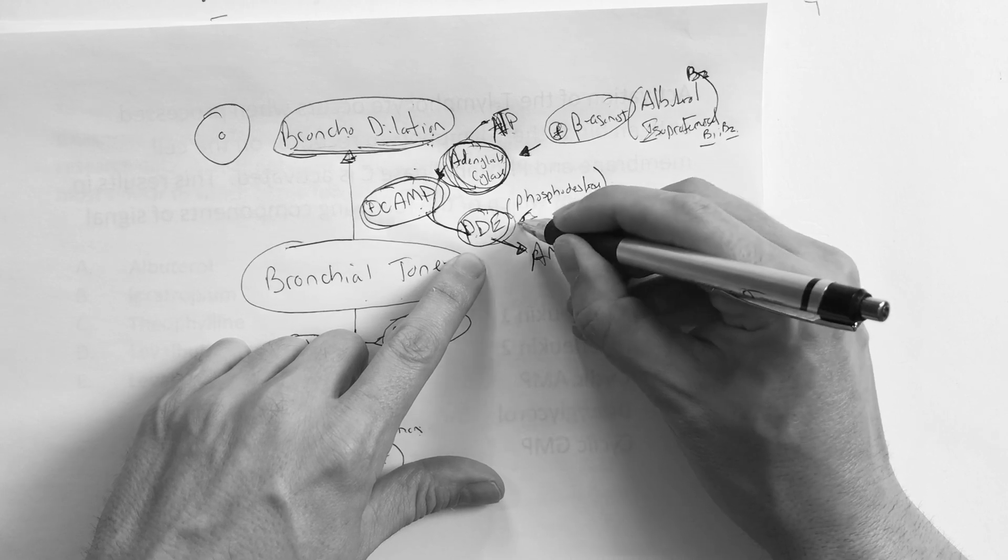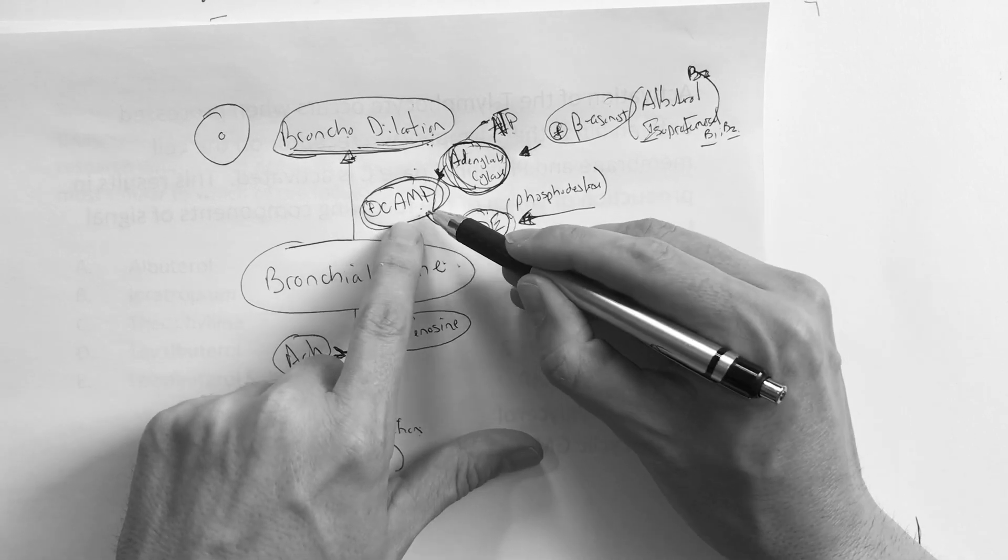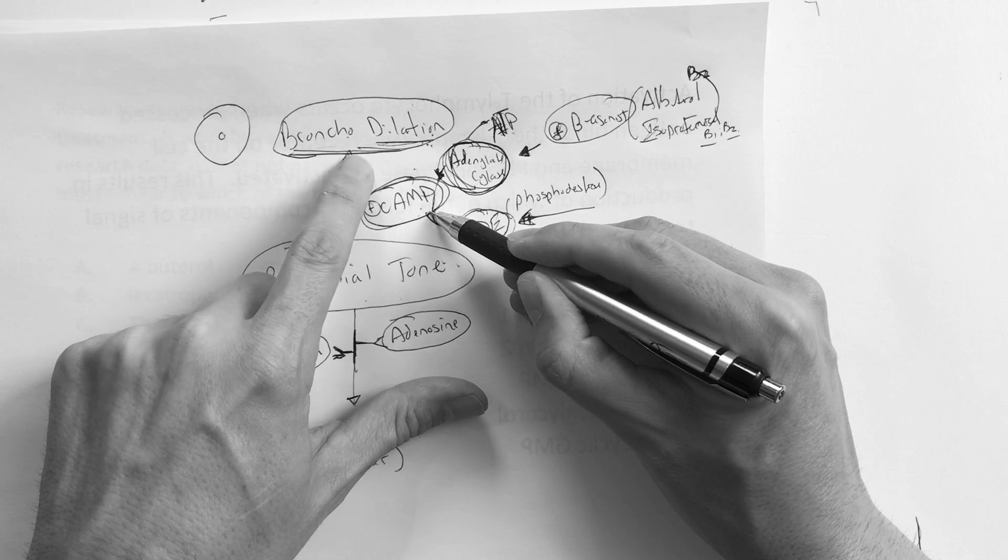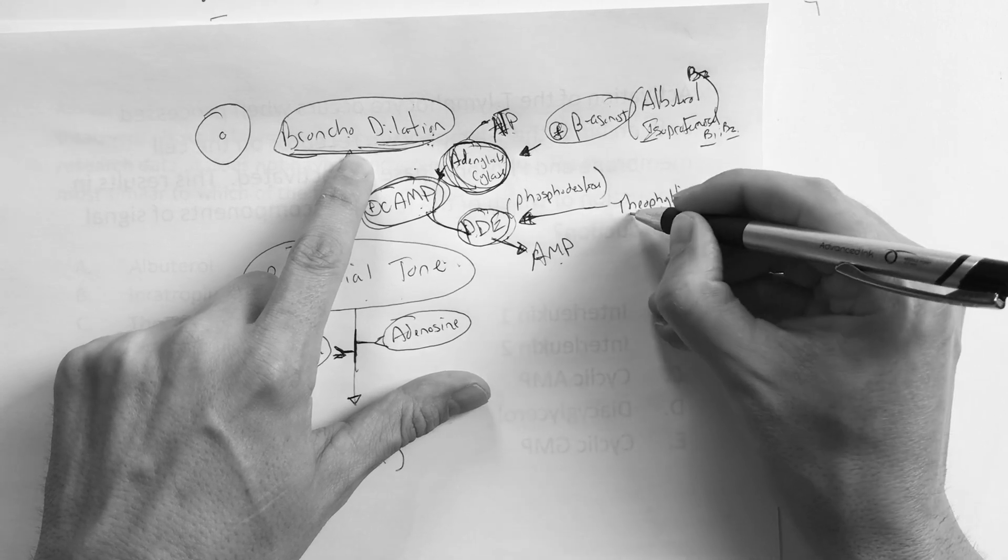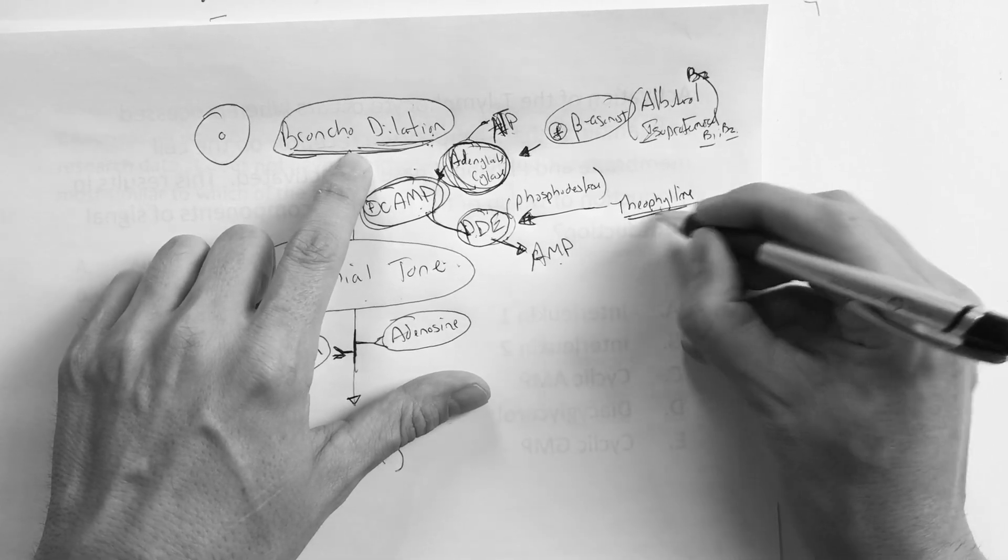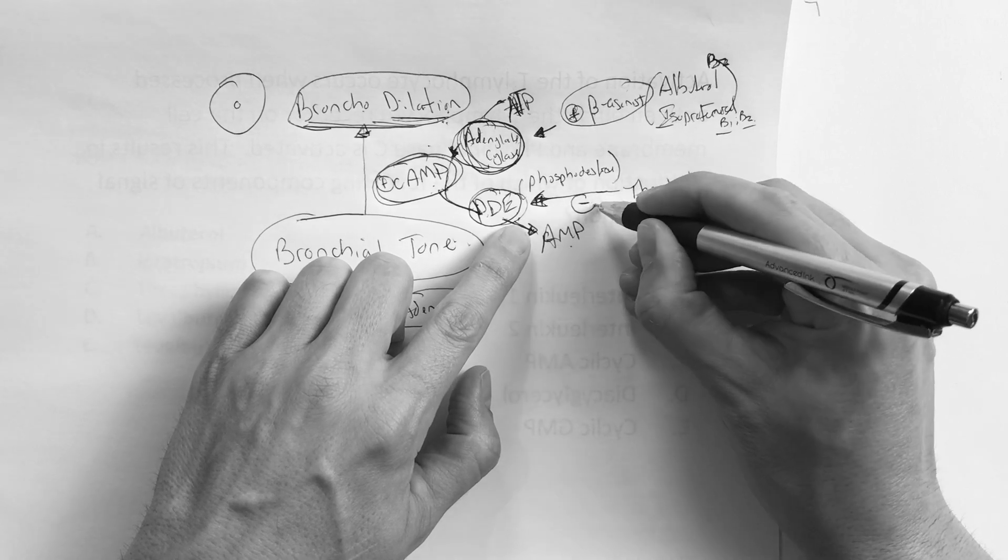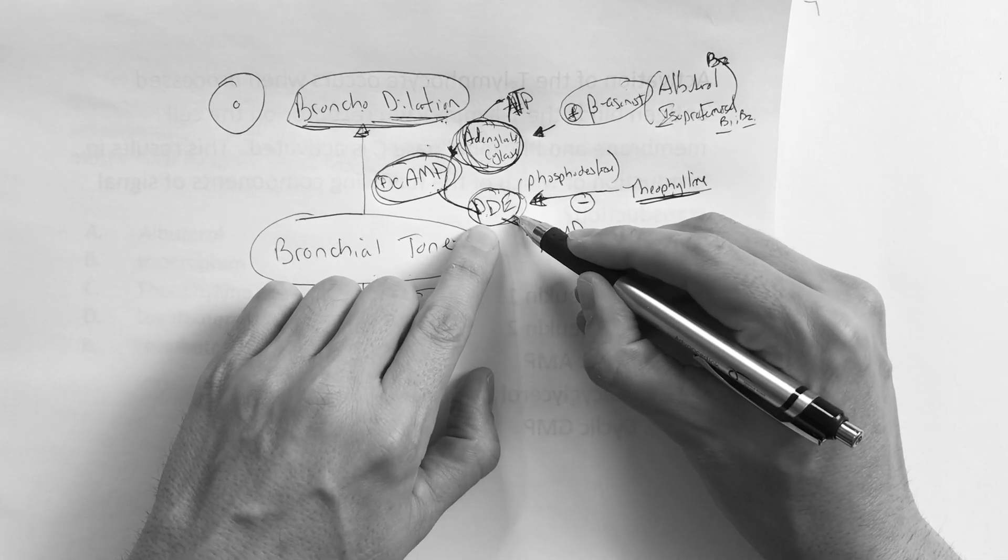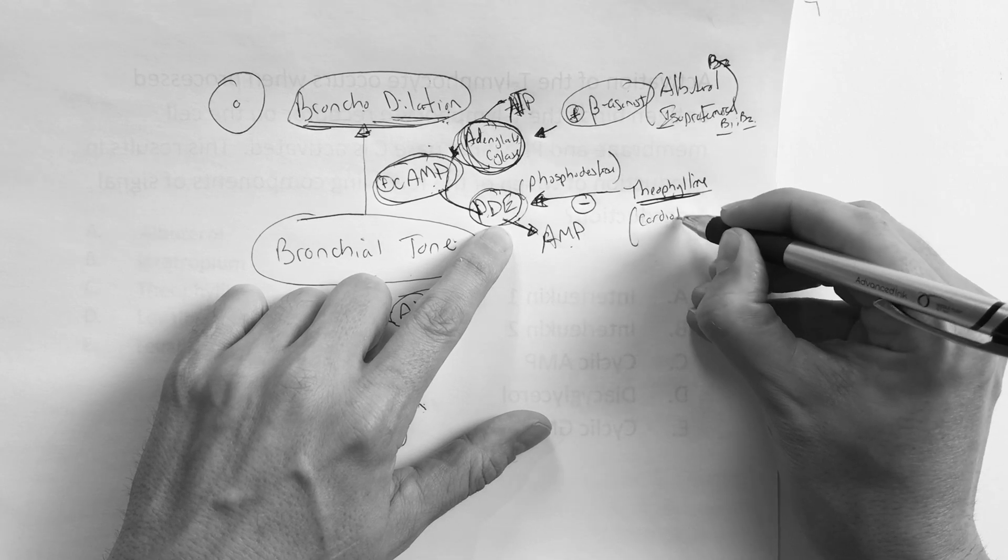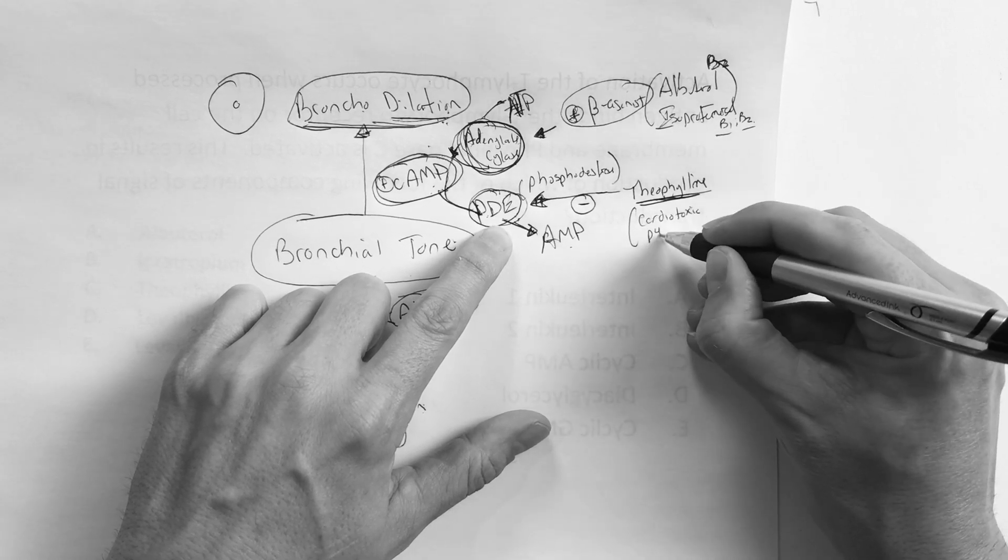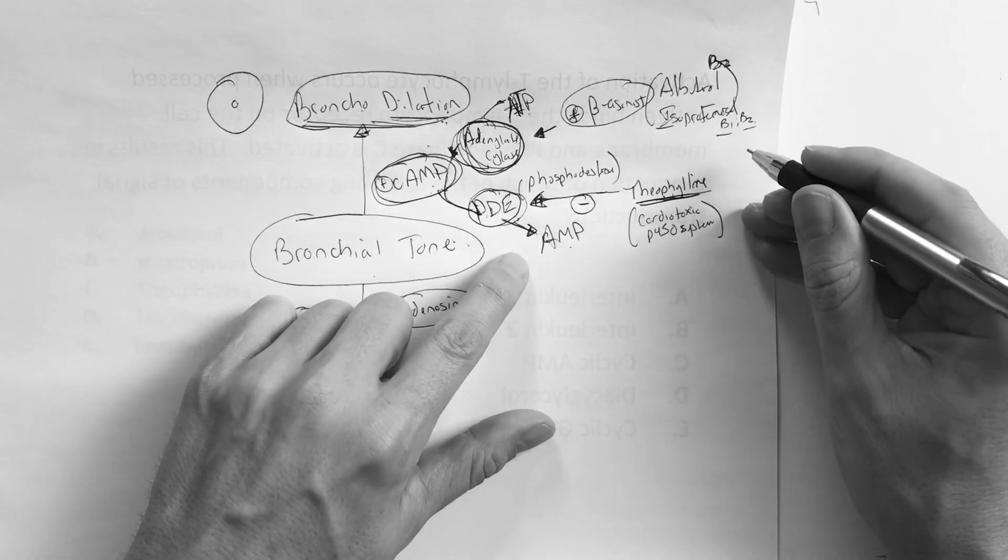It's a beta agonist that activates adenylate cyclase, which increases cyclic AMP, which bronchodilates. Now they come over here and say, why don't we just inhibit phosphodiesterase? If we inhibit him, that means this guy is going to stick around longer and we'll get more dilation. What medication does that? Theophylline. It's been around a long time. You don't see it very much, but every now and then there's an old person comes in on this stuff. Theophylline inhibits phosphodiesterase, which then allows that to stick around. The thing about theophylline, it's very cardiotoxic. It's part of that P450 system that we talked about.